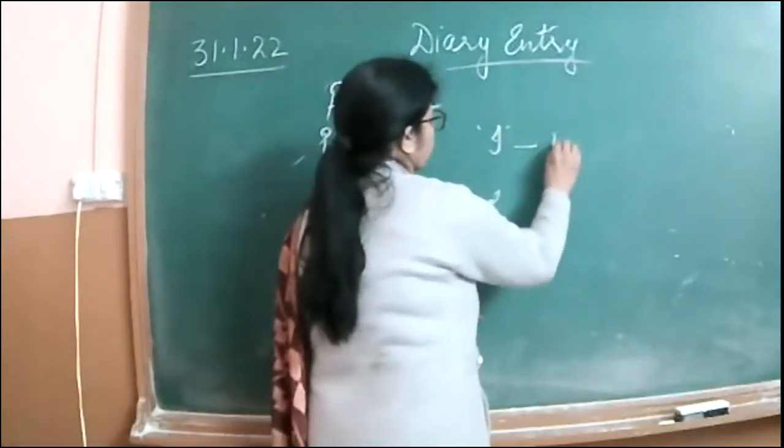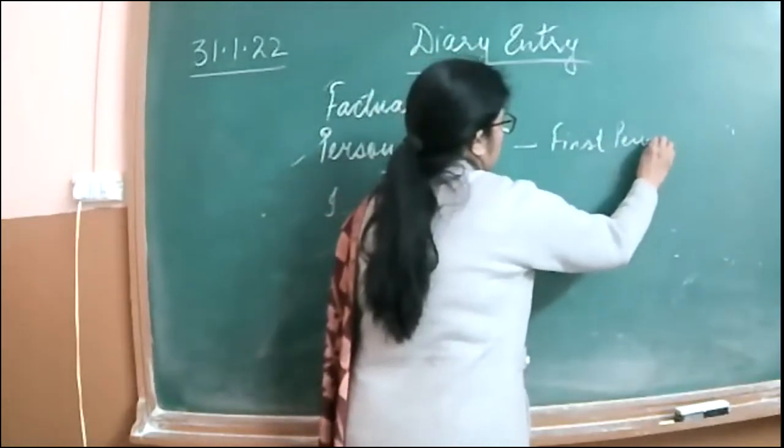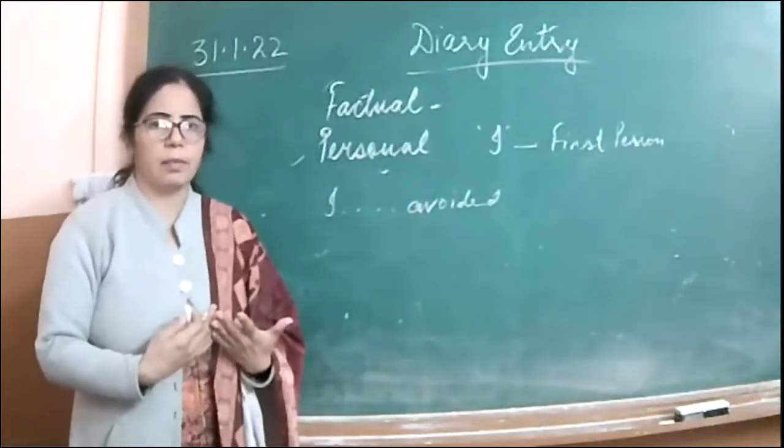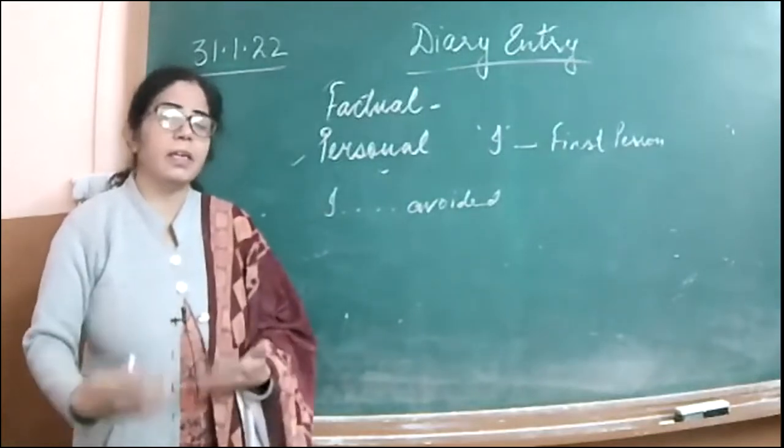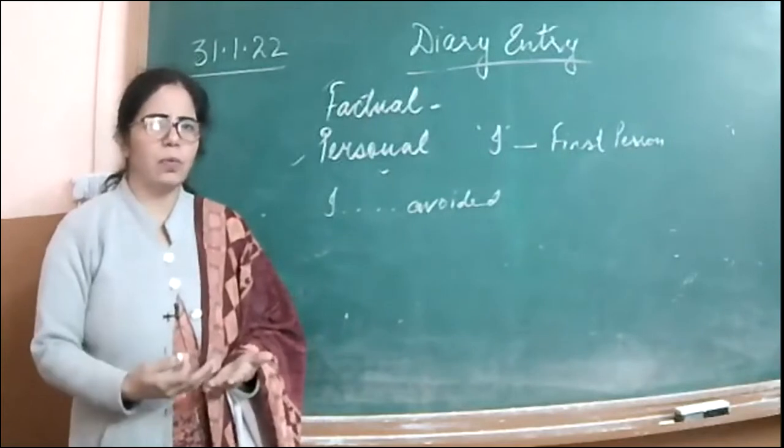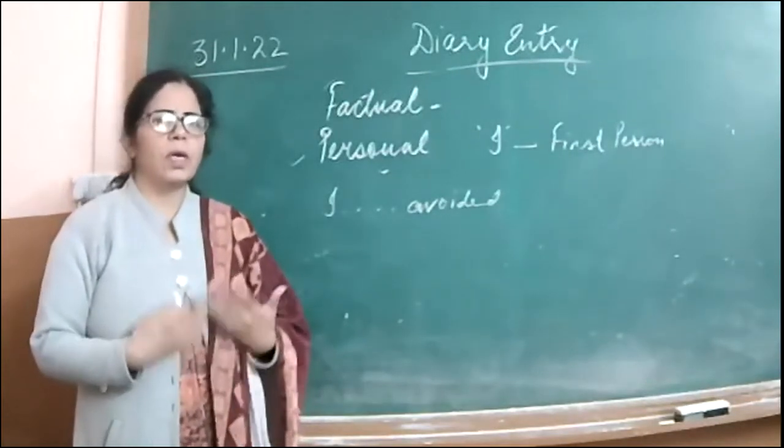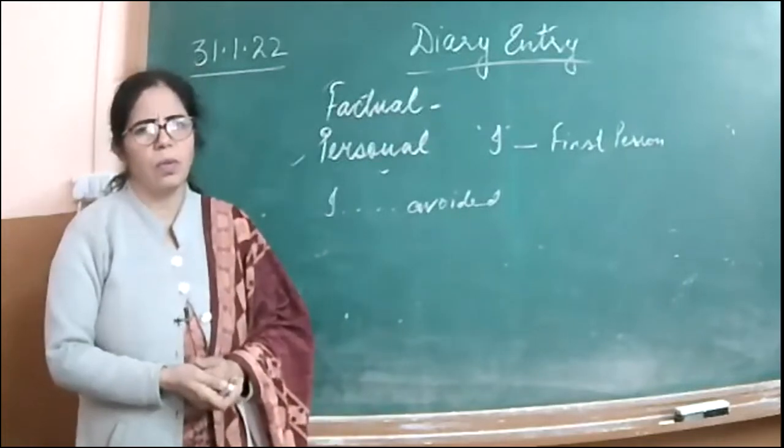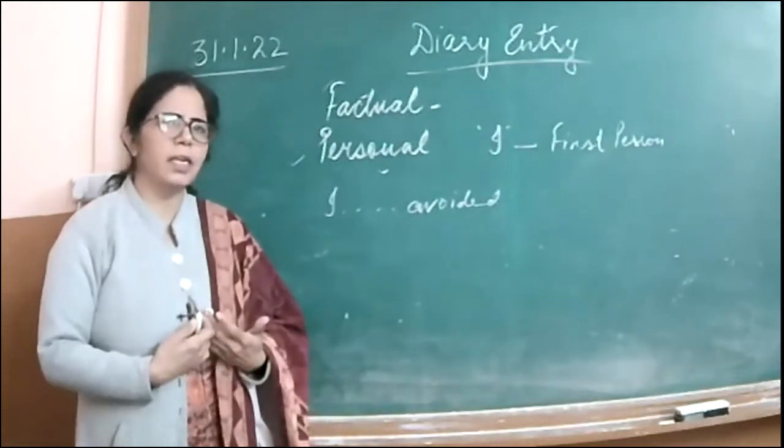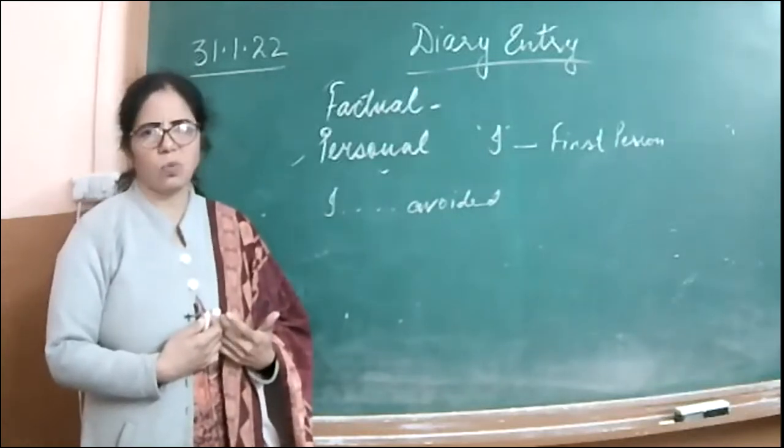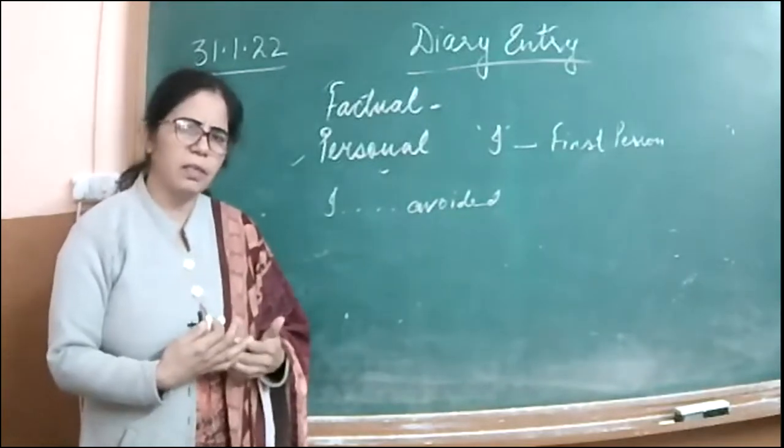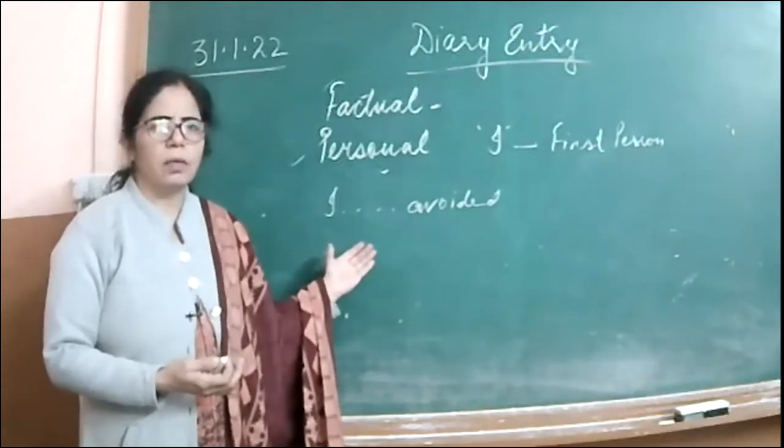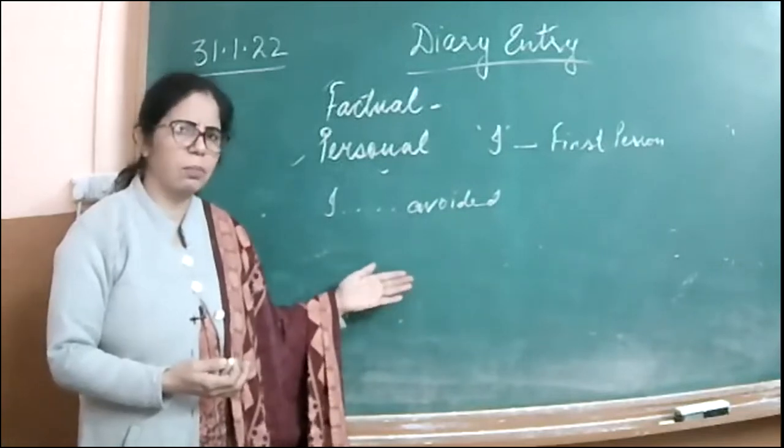So diary entry is written from first person point of view. I is there, it's about I, but don't write I, I, I again and again. The reason is when we talk to ourselves, we don't talk about I, I, I again and again. When we talk to somebody, then we say I don't think so. But when I talk to myself, then I don't need to say I don't think so. Doesn't seem to be so.